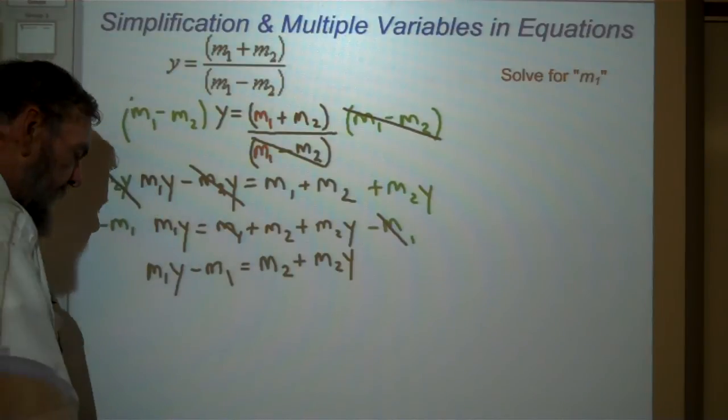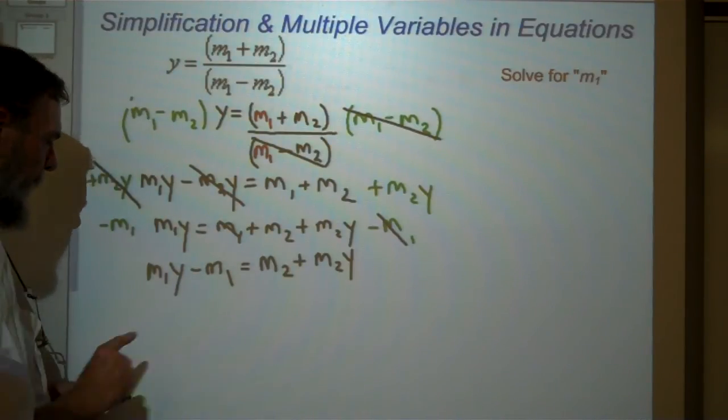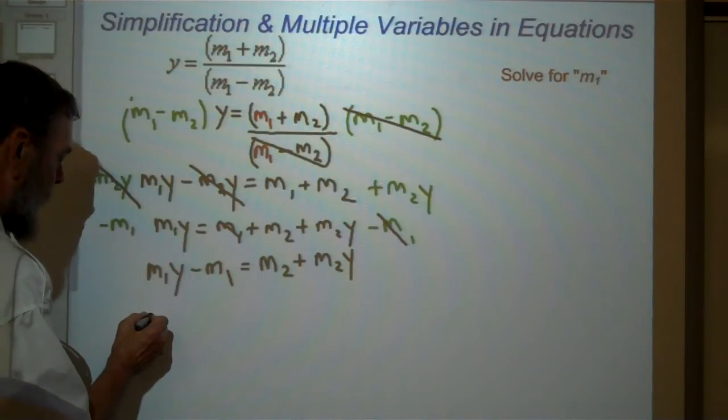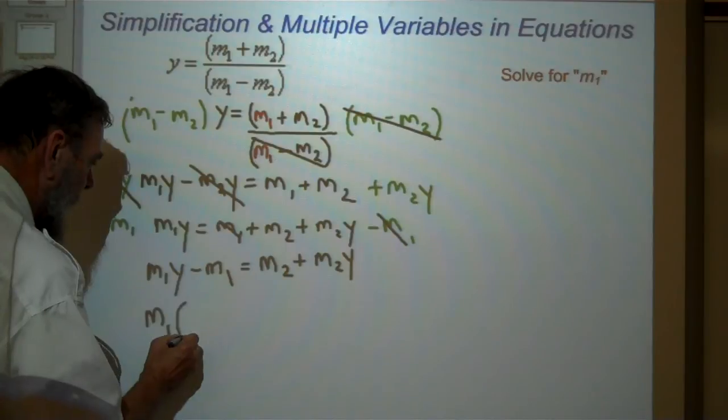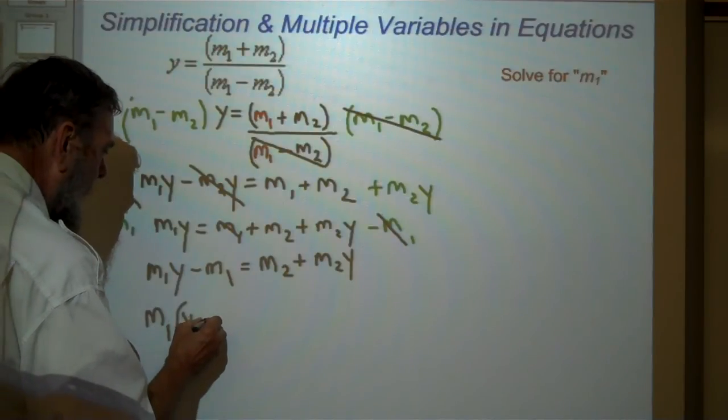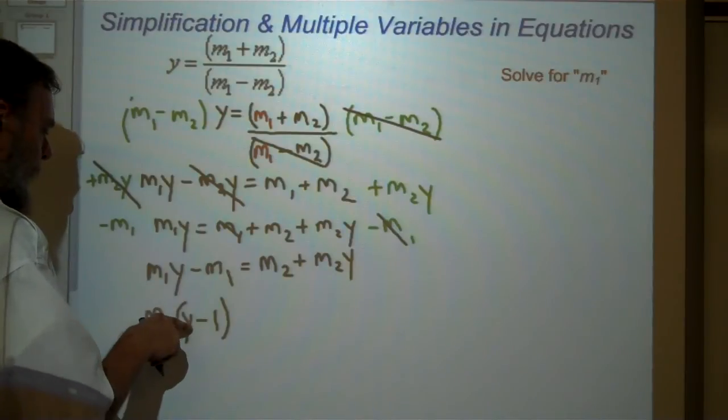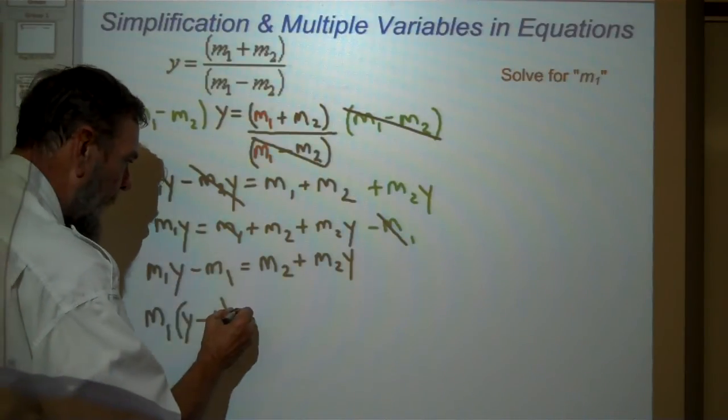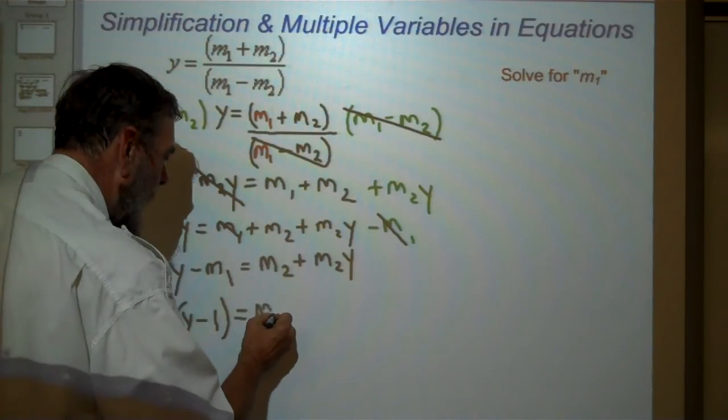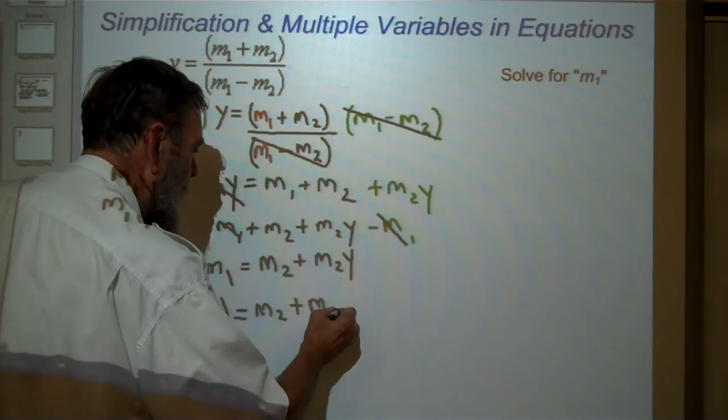Now, pay attention. Here's a key step. I've got an M1 and an M1. I only have to have one. So again, I factor M1 times the quantity Y minus 1. M1 times Y, M1 times 1 gives me M1. Equals M2 plus M2Y.